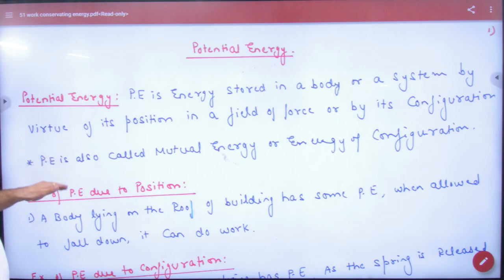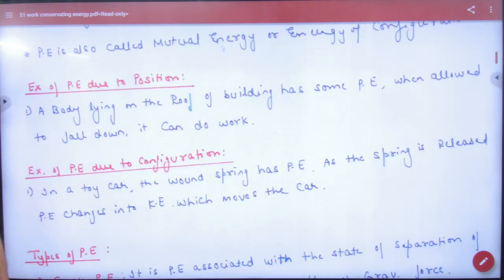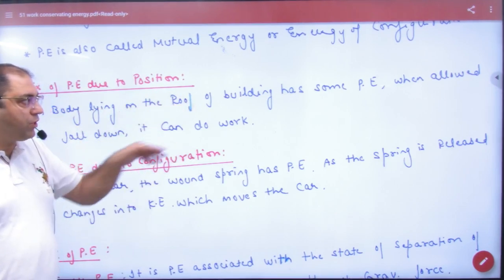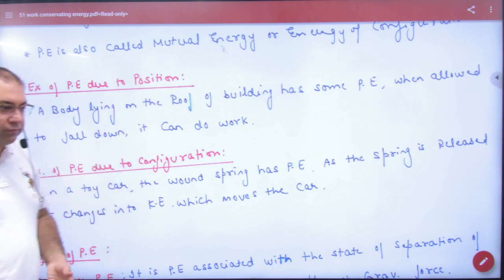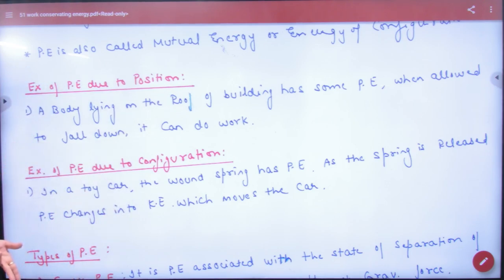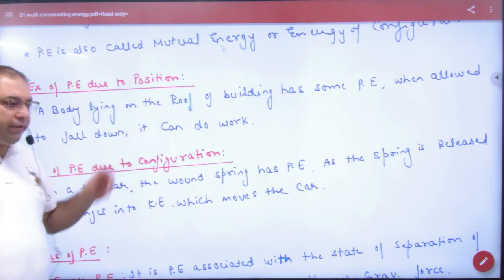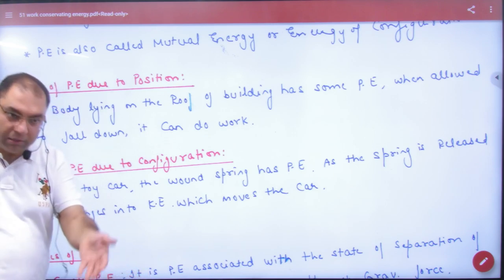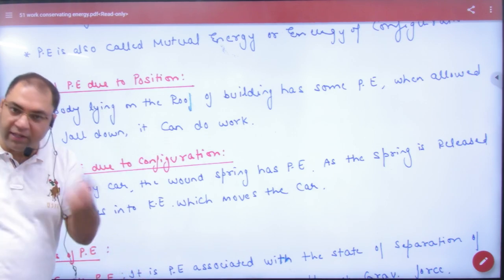Potential energy is also called mutual energy or energy of configuration. Example of potential energy due to position: a body lying on the roof of a building has potential energy. When it's dropped, it falls down and can do some work because that potential energy converts to kinetic energy.